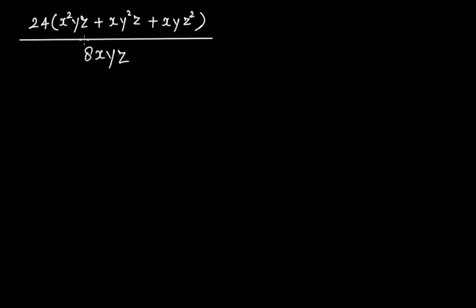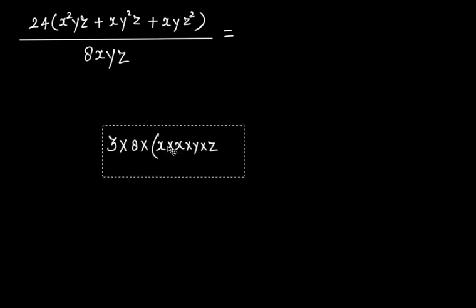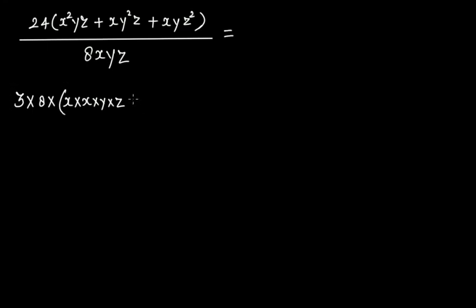So what we can do here: write 24 as 3 × 8. Now x²yz — write it as x × x × y × z. Then plus x × y × y × z, and plus x × y × z × z.